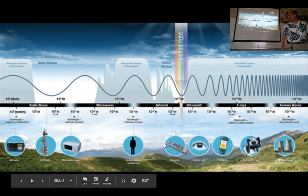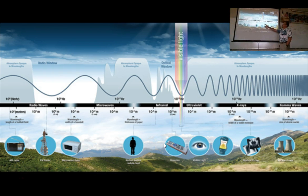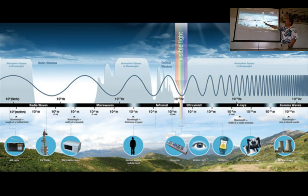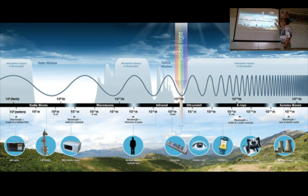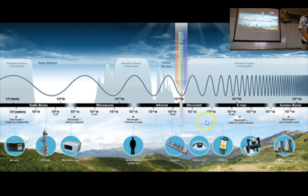Here's that graphic from earlier. The electromagnetic spectrum can be seen as a logarithmic scale from very long wavelengths to very short wavelengths. We're going to journey through the electromagnetic spectrum in this lecture, looking at different chunks of it and what we can do with those different wavelengths of energy.